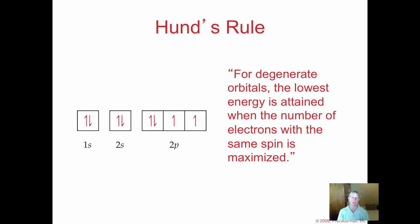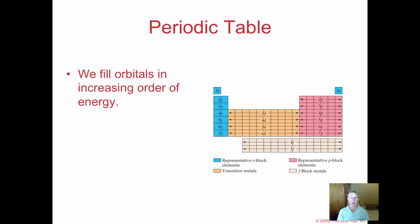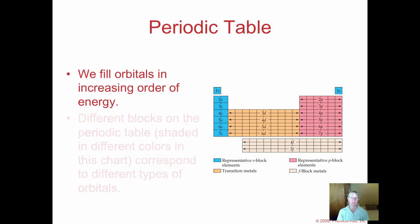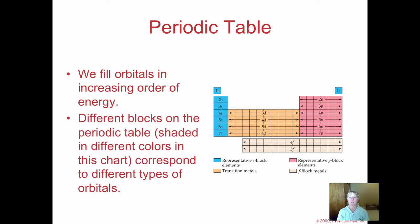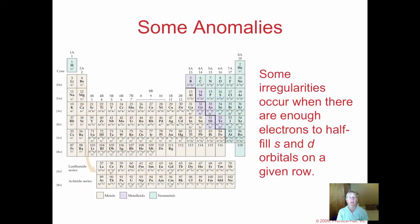We also learned the Aufbau rule: we fill orbitals in order of increasing energy. The periodic table can be divided into s, p, d, and f blocks that correspond to atoms having orbitals of those different shapes. There are some irregularities when you have enough electrons to half-fill s and d orbitals on a given row. I'll discuss these anomalies in class during lecture.